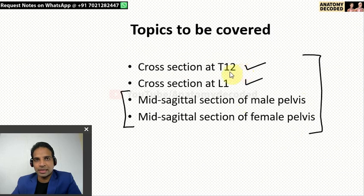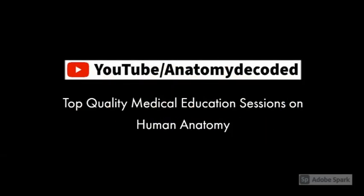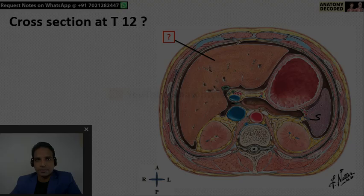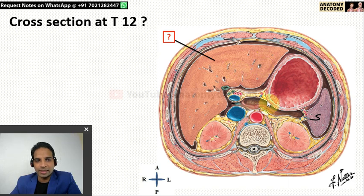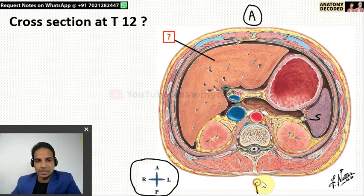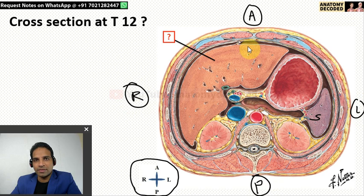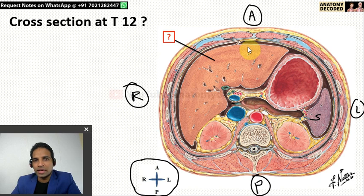Let us begin with the cross section at T12 vertebrae. In this image we can see the cross section at T12 vertebrae. Before beginning with the section, we will have to orient ourselves towards the image. This is the anterior aspect, this is the posterior aspect, this is the left side and this is the right side. Whenever we study a section, we always study from the inferior aspect, because later on when we learn about CT scan and MRI, most sections are studied from the inferior aspect. So this is the cross section of the abdomen cut and viewed from the inferior aspect.